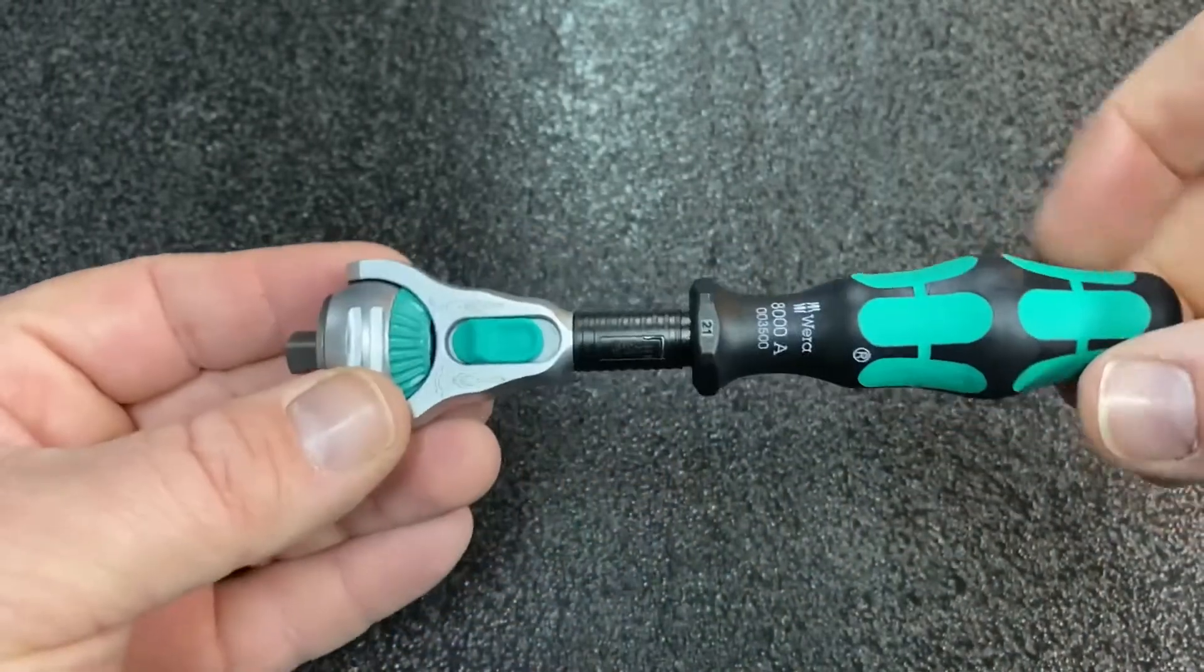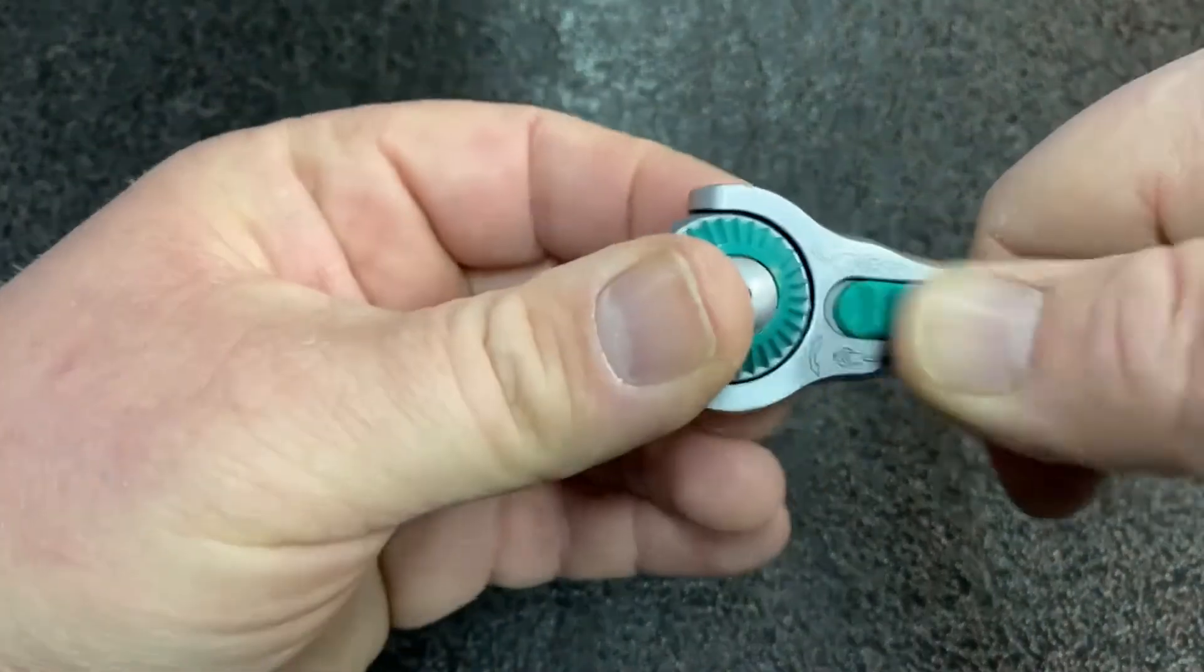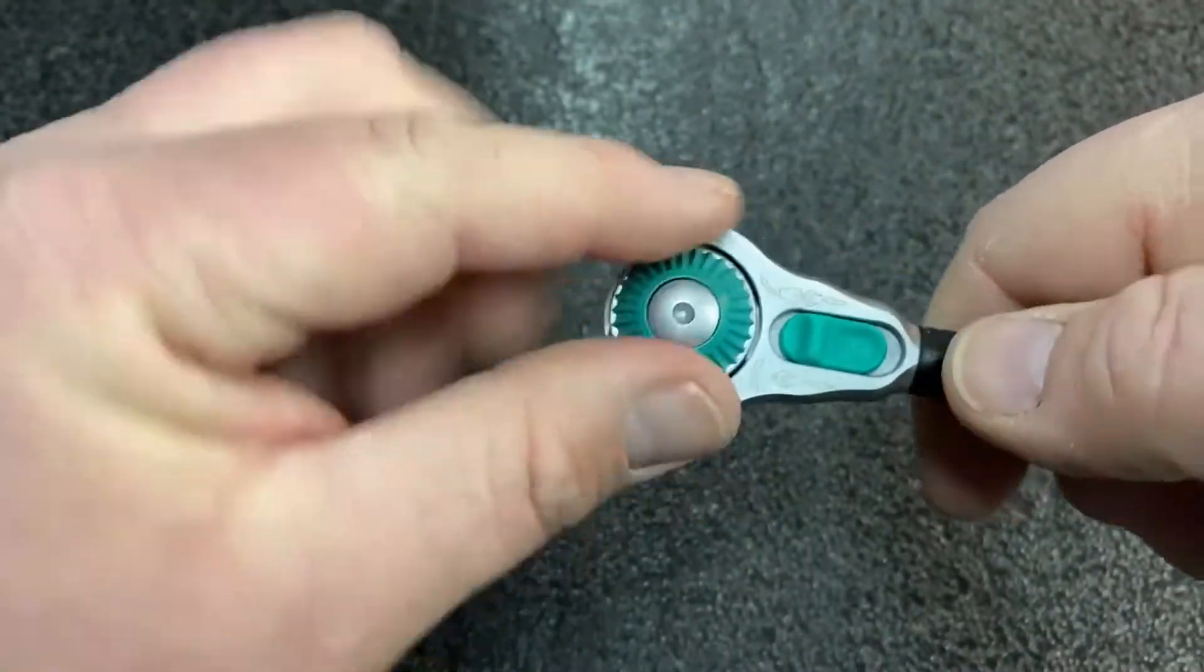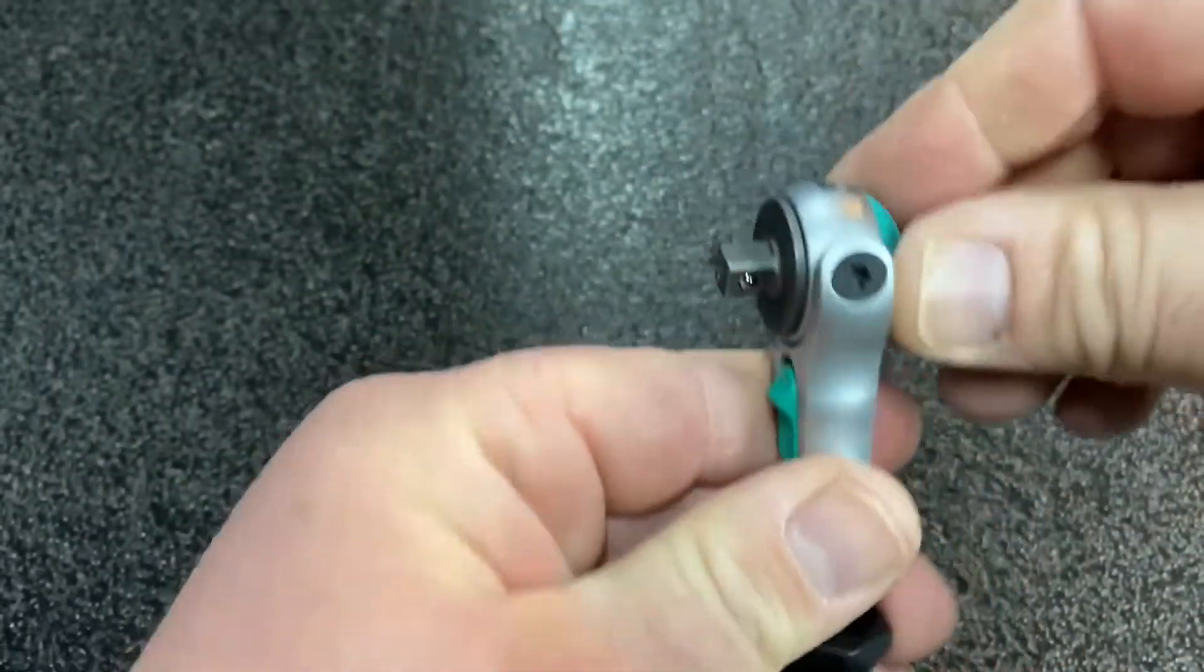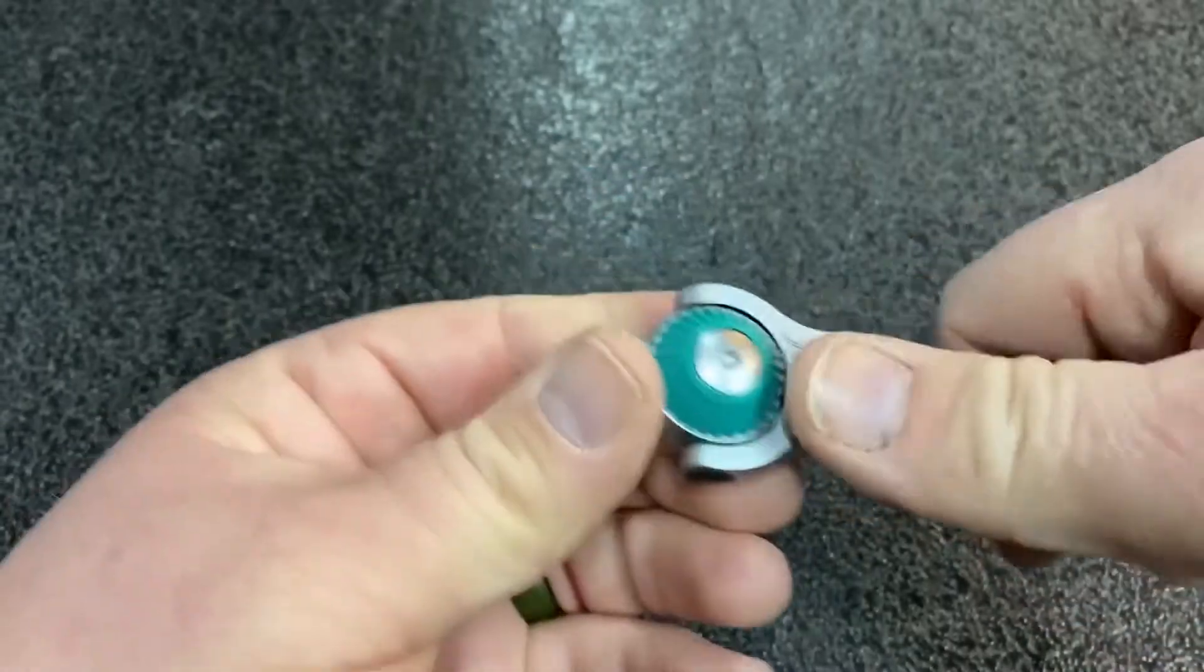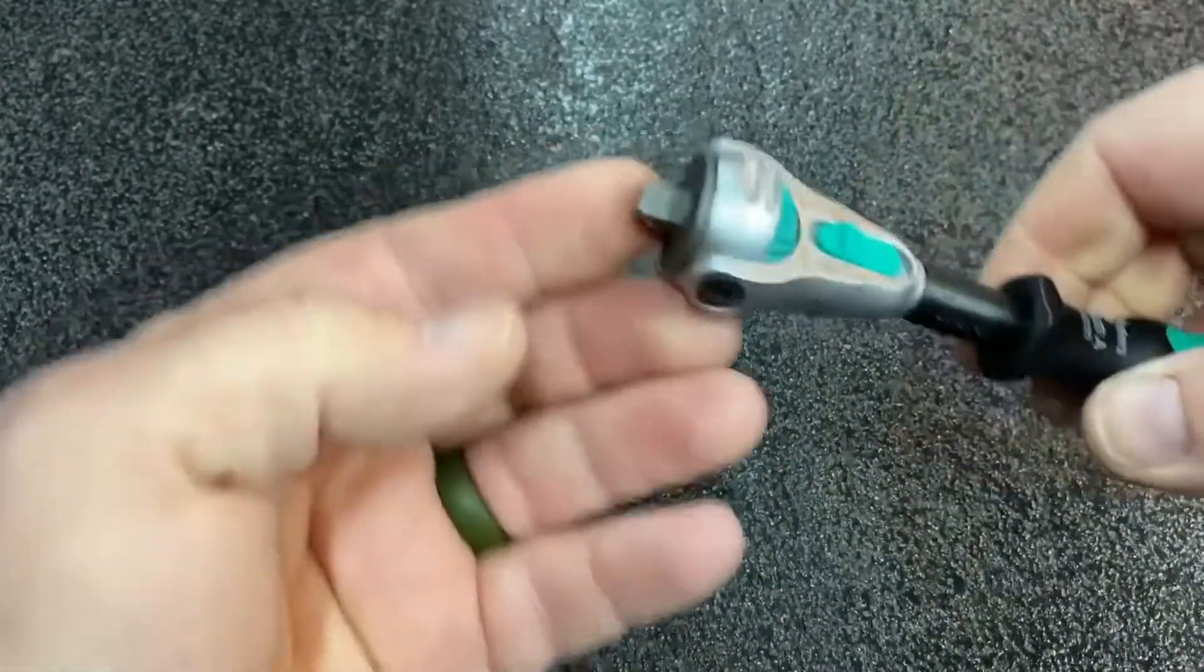The time and thought they put into these tools is impressive. Another thing I noticed is how the selector knob is a 360-degree type knob instead of a lever to change direction. I wondered why they did that until I was playing with this a little bit.